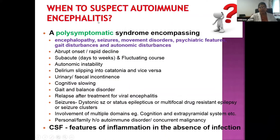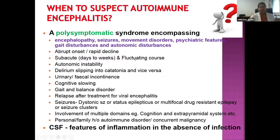When to suspect autoimmune encephalitis: whenever a child presents with a polysymptomatic syndrome involving multiple symptom groups — encephalopathy, seizures, movement disorders, psychiatric manifestations, gait disturbances, and autonomic instability — autoimmune encephalitis should always be suspected. The CSF should show features of inflammation in the absence of any infection. Key clinical pointers include abrupt onset without preceding fever, subacute course lasting days to weeks, rapid neurological decline, fluctuating course, autonomic instability, urinary or fecal incontinence, cognitive slowing, delirium, and catatonia.